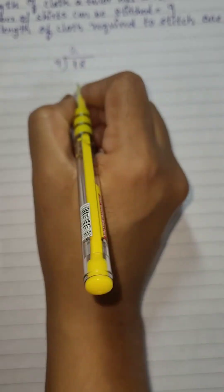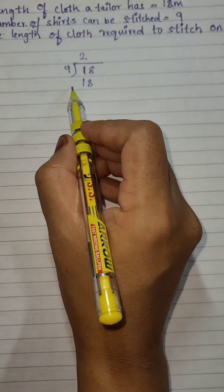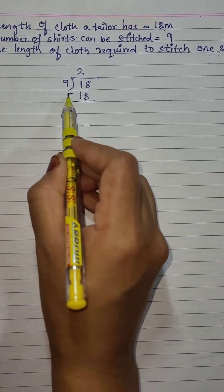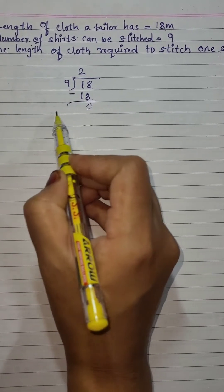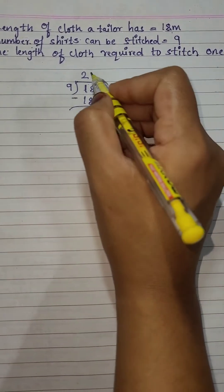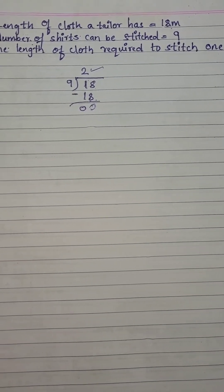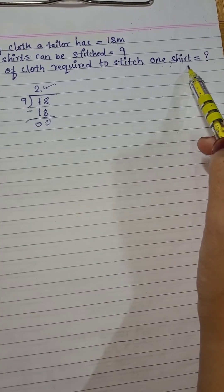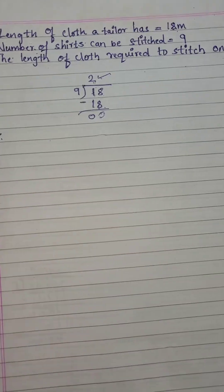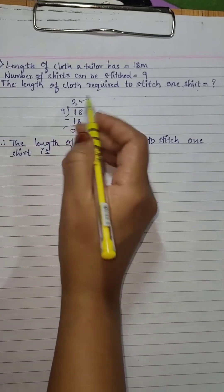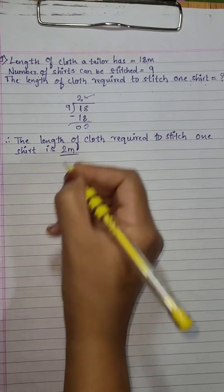Now subtract: 8 minus 8 is 0, 1 minus 1 is 0. So your answer is 2. Therefore, the length of cloth required to stitch 1 shirt is 2 meters.